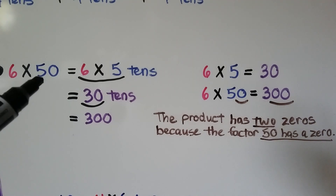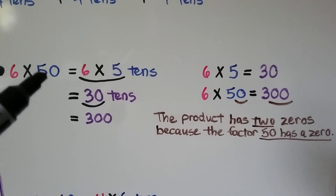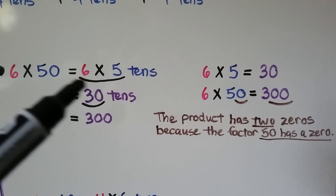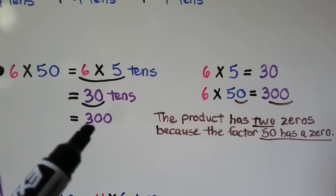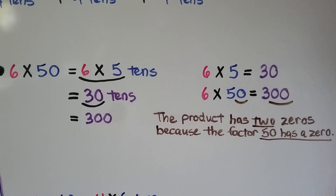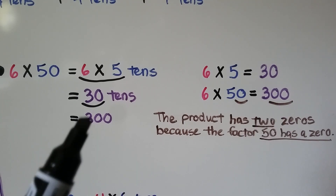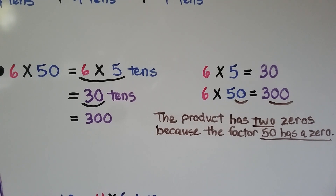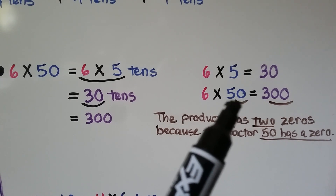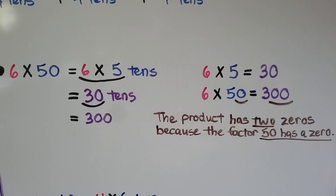Here we have 6 times 50, which is equal to 6 times 5 tens — because 50 is 5 tens. We do the basic fact of 6 times 5, which is 30, so that means it's equal to 30 tens. 30 tens is equal to 300. Notice: 6 times 5 equals 30, and 6 times 50 equals 300. The product has 2 zeros because the factor 50 has a zero — there's a zero in the factor, giving us 30 tens, so we have 2 zeros in our product.